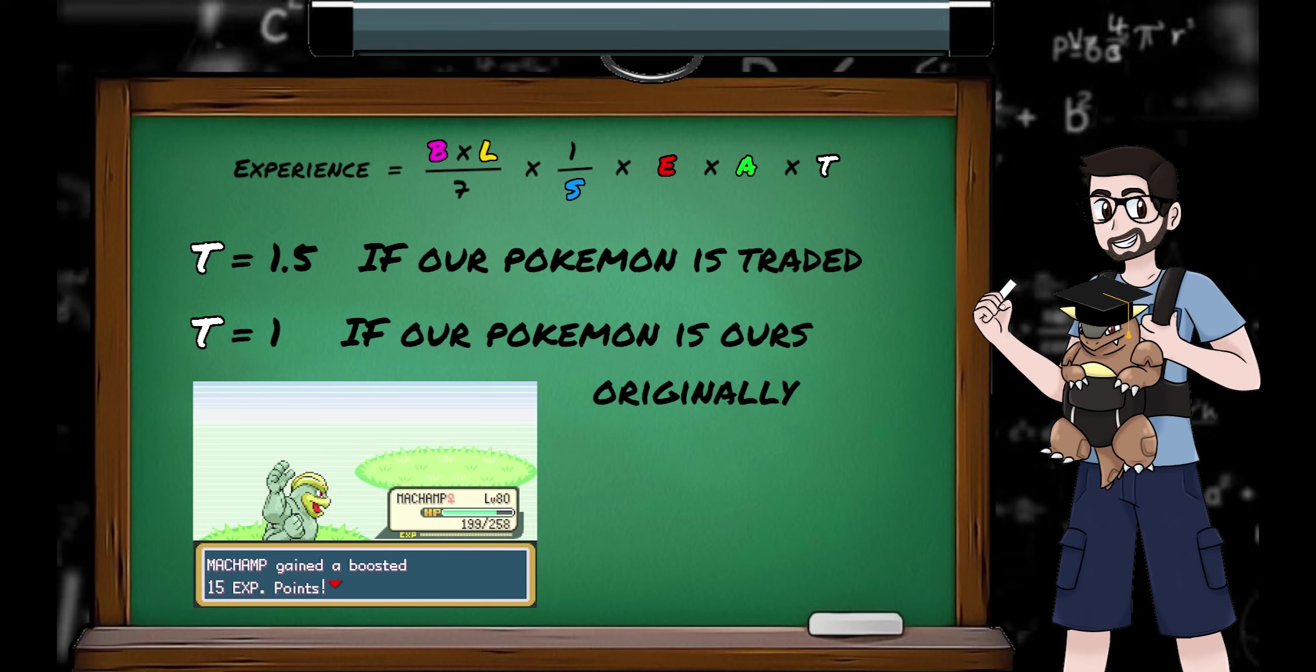And finally we reach the T. This is another 1.5 times modifier, for if your Pokemon gaining the experience, either via participating or XP share, is a traded Pokemon. Or more technically, if its original trainer ID is different from your current trainer ID. You'll see this bump to gained experience on screen as boosted experience.